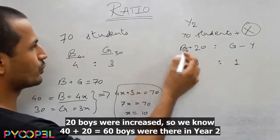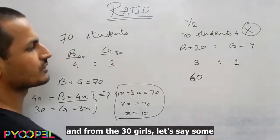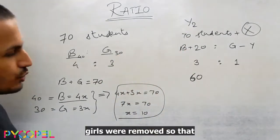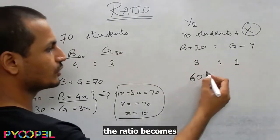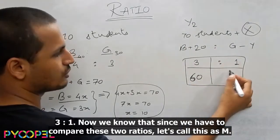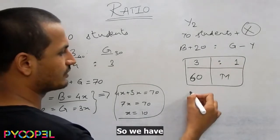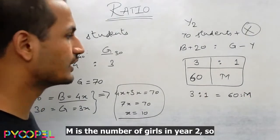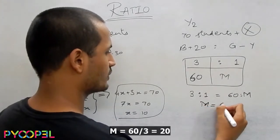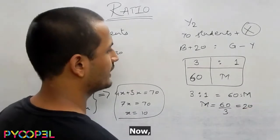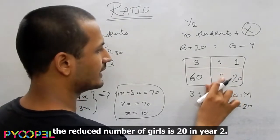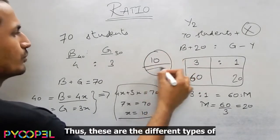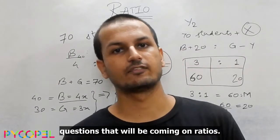Now, it is told to us that in year 2, 20 boys were increased. So we know 40 plus 20 is equal to 60 boys who were there in year 2. And from the 30 girls, let's say some girls were removed so that the ratio becomes 3 is to 1. Now, we know that since we have to compare these two ratios, let's call this as N. So we have 3 is to 1 is equal to 60 is to N. N is the number of girls in year 2. So N is equal to 60 by 3 which is equal to 20. Now, the reduced number of girls is 20 in year 2. In year 1, it was 30. So we clearly know that 10 girls were removed.